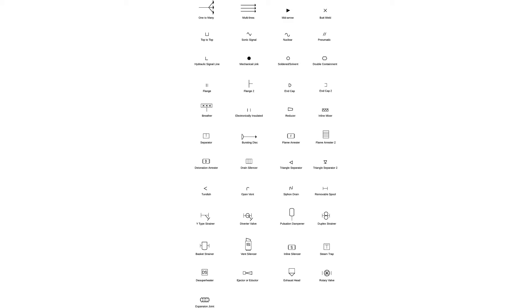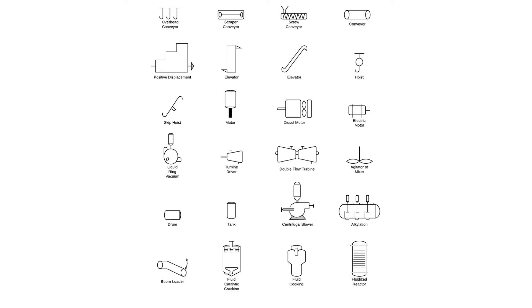And then here are yet some more symbols that you might find on a P&ID. Here you can see you have a scraper conveyor, overhead conveyor, screw conveyor, you have an elevator, a hoist, skip hoist, different symbols.